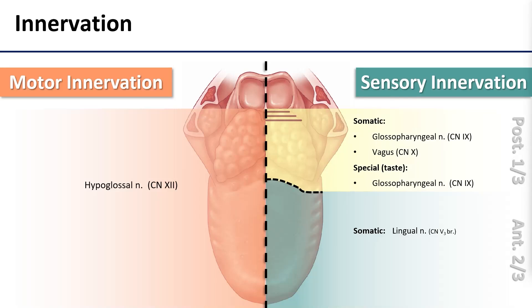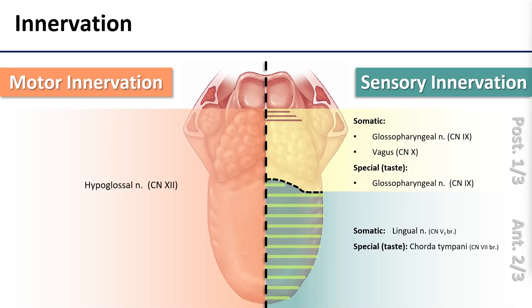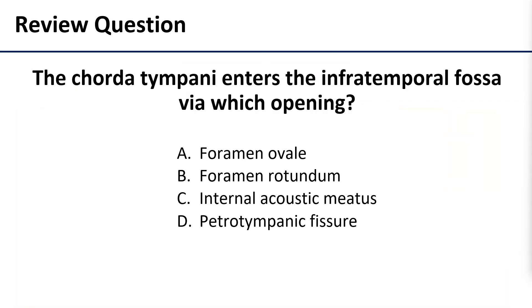Adding in our special sensory for the anterior tongue here from chorda tympani completes our map, and it actually completes this entire learning objective.